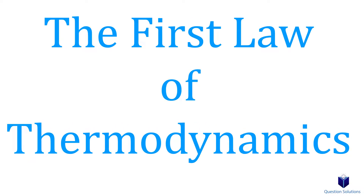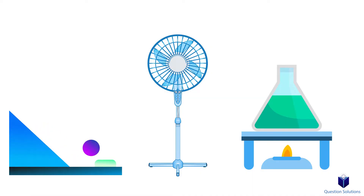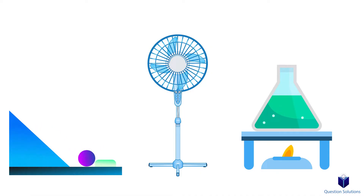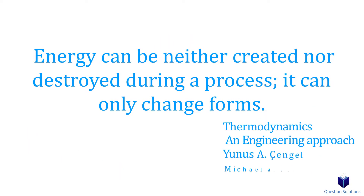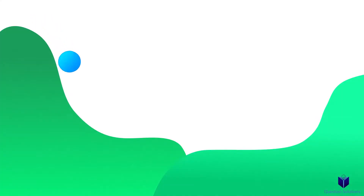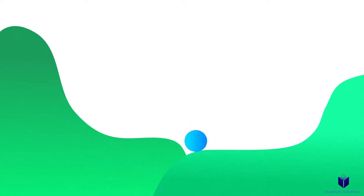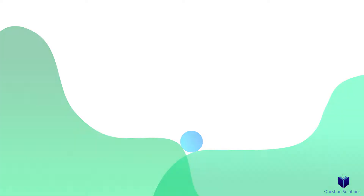Let's talk about the first law of thermodynamics. The goal is to take all the forms of energy, like work, heat, and total energy, and relate them together. The first law of thermodynamics states that energy can be neither created nor destroyed during a process — it can only change forms. For example, from kinetic to heat, or potential to kinetic and so forth. This means that all the energy can be accounted for during any process. It's really just a different way of saying the conservation of energy.